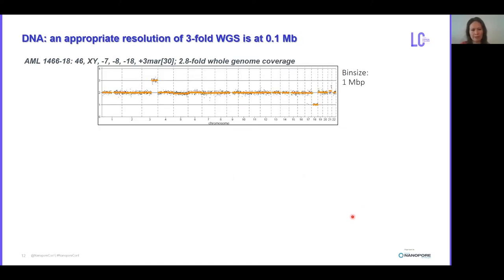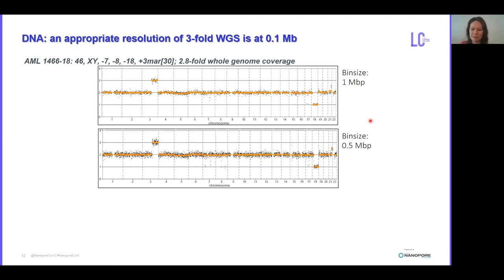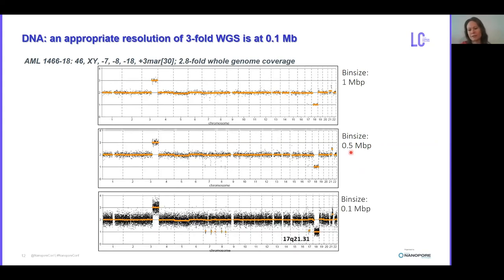Now I would like to show you another profile of patient 1466-18. The cytogenetics report stated that this patient has a loss of chromosome 7, of chromosome 8, and of chromosome 18, as well as three marker chromosomes — and 30 metaphases were inspected with the same aberrations. You can see that if we profile the case at 1 MB resolution, we detect loss of chromosome 18. If we increase our resolution and profile the same reads at 0.5 and 0.1 MB, we start to detect loss of material on chromosome 7 and on chromosome 8.